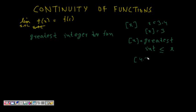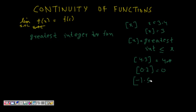What will be ⌊4.3⌋? The greatest integer less than or equal to 4.3 is 4. For 0.2, the greatest integer less than or equal to 0.2 is 0. And for -1.5, the greatest integer less than or equal to -1.5 is -2. Now you understand this.